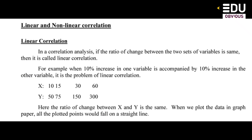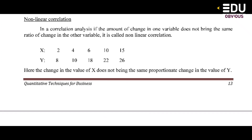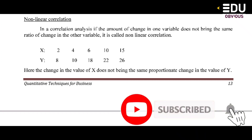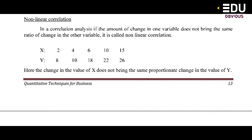The ratio of change between X and Y being the same confirms linear correlation. What is non-linear correlation? If the amount of change in one variable does not bring the same ratio of change in the other variable, it is called non-linear correlation. For example: X is 2, Y is 8; X is 4, Y is 10; X is 6, Y is 18 — X and Y are not in the same proportion, so it is non-linear correlation.